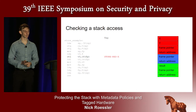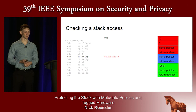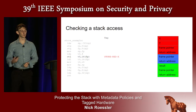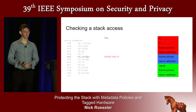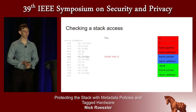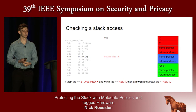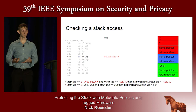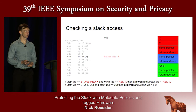We'll now tie this back to the stack labeling we looked at earlier. We have this architecture providing a tag on every word of data in the system, and we can write rules to describe what operations are allowed. Consider a simple program trying to write to a local variable x. We can communicate the intent of this instruction — that it should write specifically to this red x — by placing a tag on the instruction. We can then write a rule: if the instruction tag is 'store red x' and the memory tag is 'red x', then the operation is allowed and the result tag remains 'red x'. More generally, if the instruction tag is to store some color c containing object identifier n, and the memory tag is colored c containing object n, then the operation is allowed.